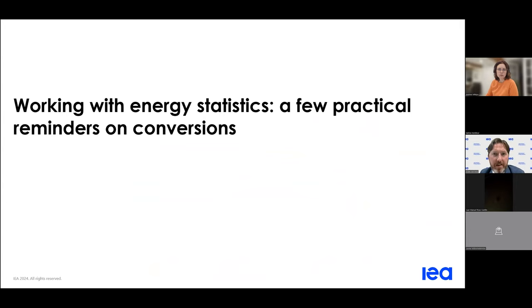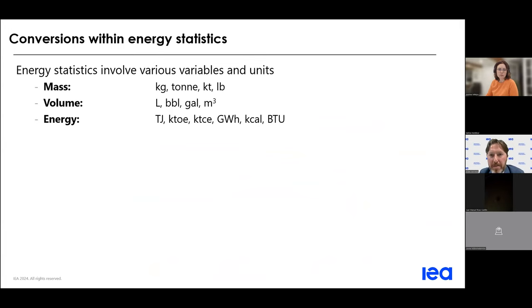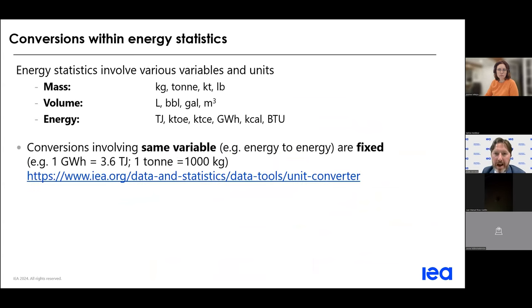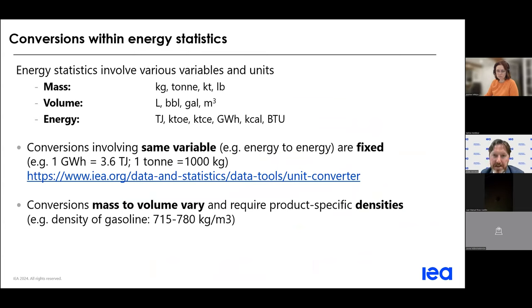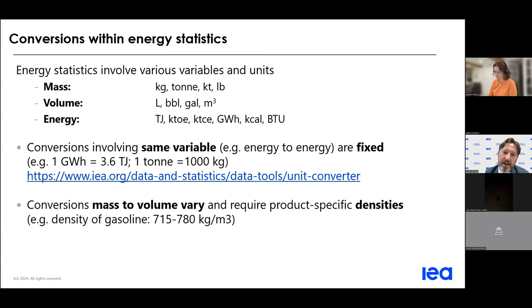Moving on to conventions when working with energy statistics — there are different units of measurement we may encounter: mass, volume, or energy units, and depending on the country, imperial or metric units may be used. We frequently need to convert from one unit to another to compare data and create energy balances. Converting within one category is generally easy as conversion factors are constant — for example, one metric ton is always 1,000 kilograms. However, to convert between categories we need additional information, such as product-specific densities or calorific values. Energy balances are based on energy units, but some data are commonly collected in physical units such as tons of coal, so the accuracy of calorific values is important.